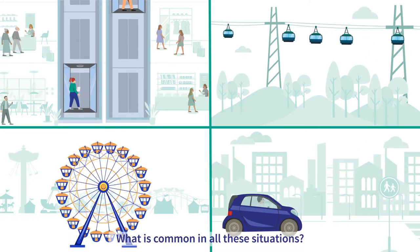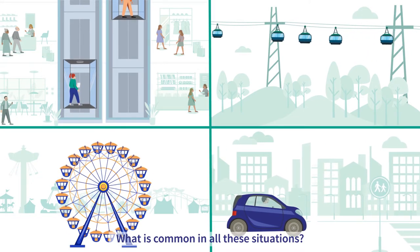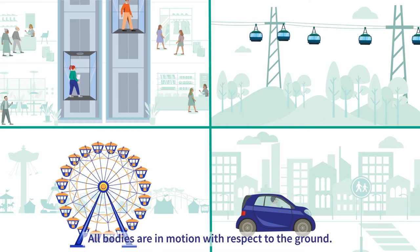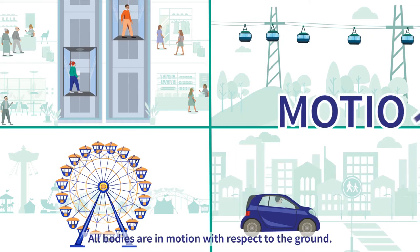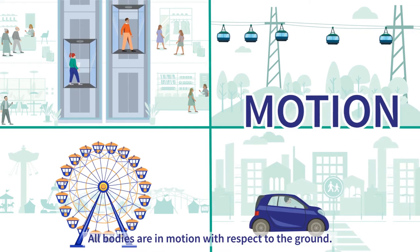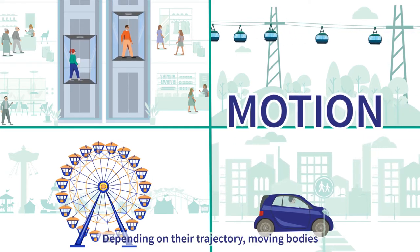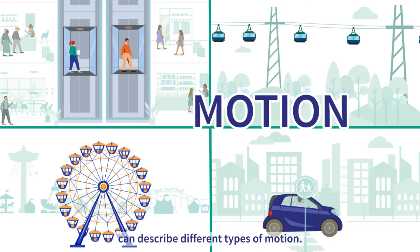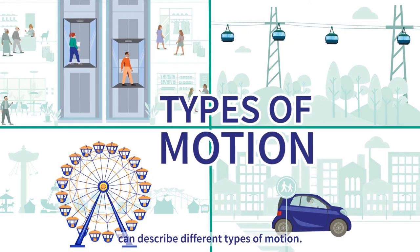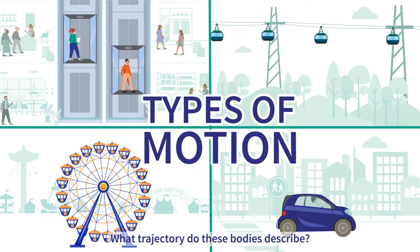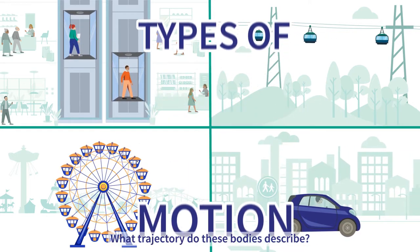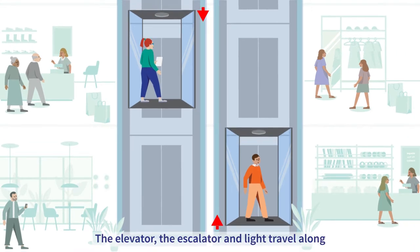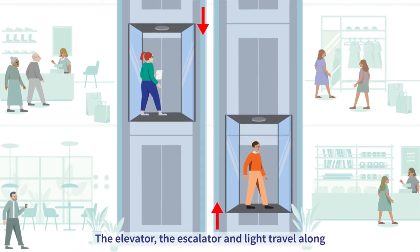What is common in all these situations? All bodies are in motion with respect to the ground. Depending on their trajectory, moving bodies can describe different types of motion. What trajectory do these bodies describe?